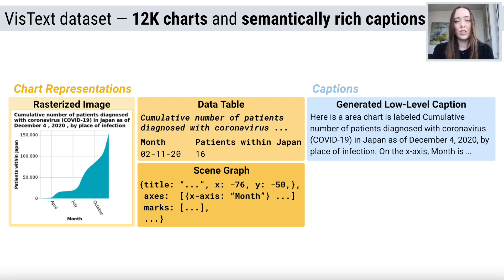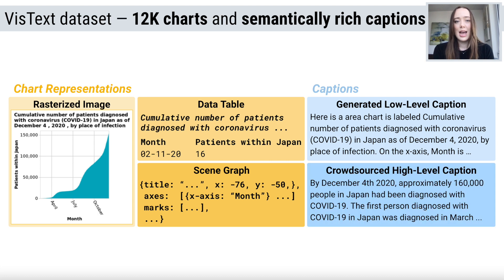In VizText, each chart is paired with a low-level caption describing the chart's elements and encoded properties, and a crowd-sourced high-level caption that describes trends and takeaways. By splitting the captions into levels of semantic content, VizText supports customized captioning based on user needs.